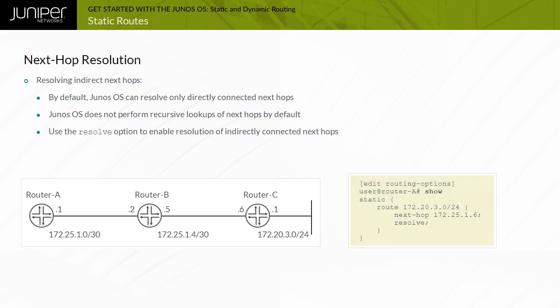It is recommended to use a dynamic routing protocol as the method of resolution whenever possible. Using a dynamic routing protocol rather than a static route to resolve indirect Next Hops dynamically removes the static route if the indirect Next Hop becomes unavailable.